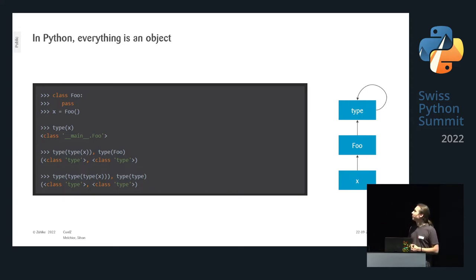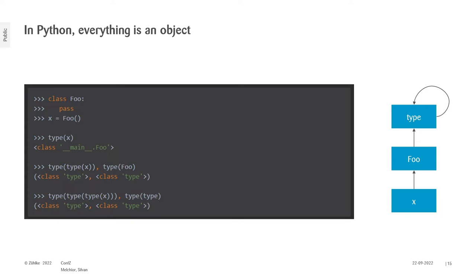If we define a class `Foo` and create an instance `x`, then `type(x)` is `Foo` — no surprise. But `type(Foo)` — or `type(type(x))` — is `type`. And `type(type)` is again `type`. So we have: x is of type Foo, Foo is of type `type`, and `type` is of type itself — an infinite loop. That's normal Python.